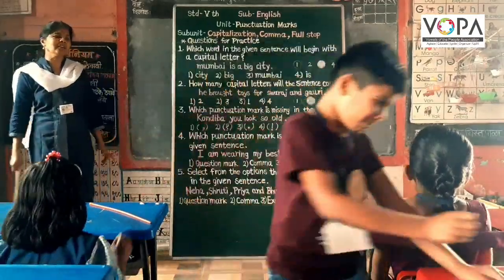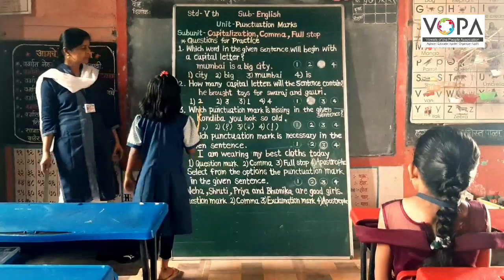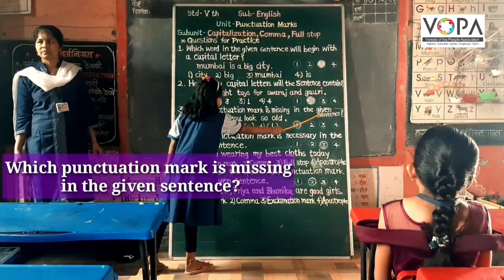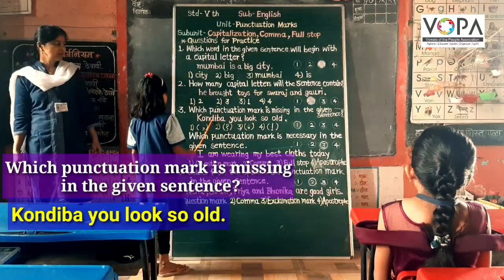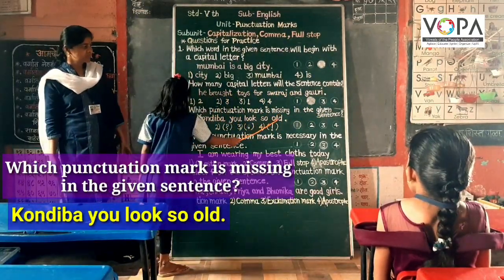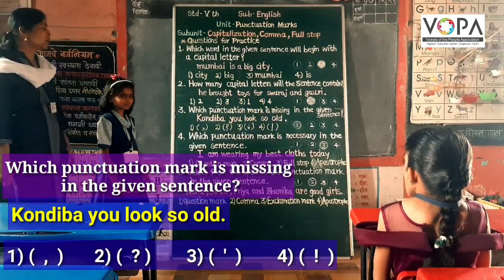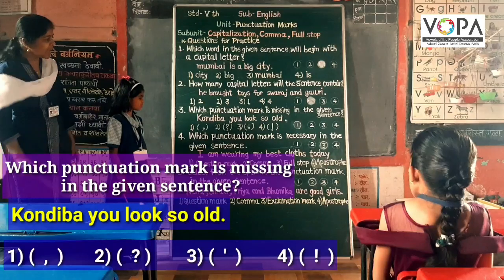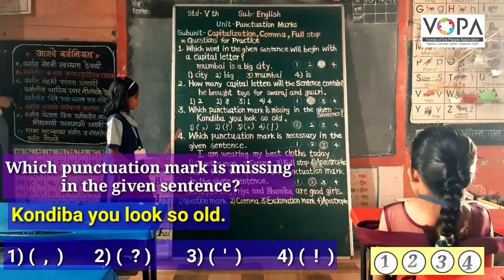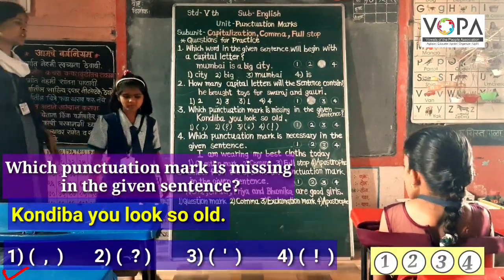Now Yadhi, come here. Read this question: Which punctuation mark is missing in the given sentence? The answer is one. What is the number of this answer? First. Very nice. Now circle the first option.